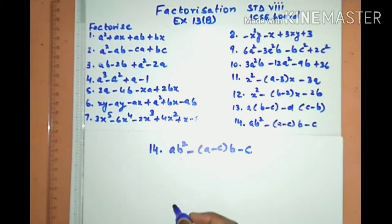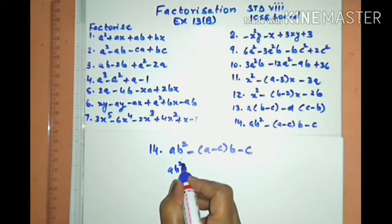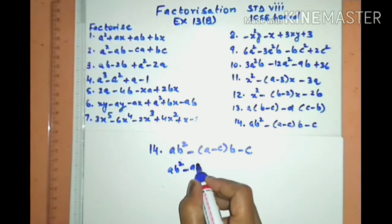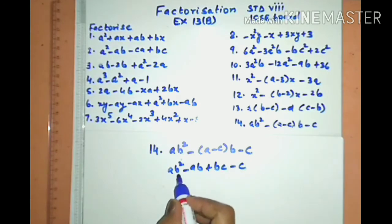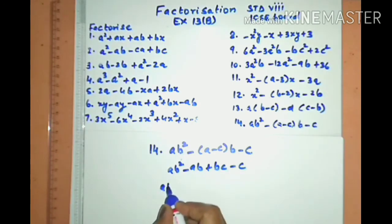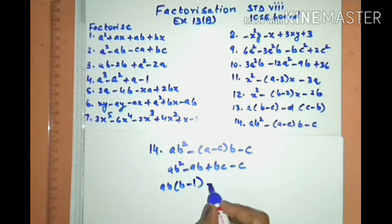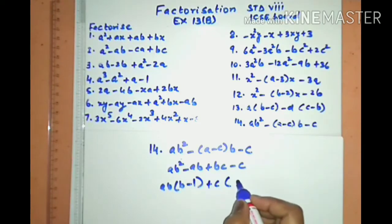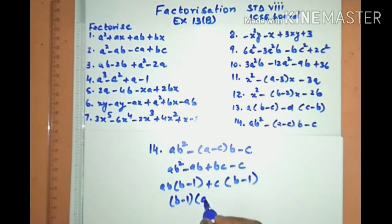Sum number fourteen is similar to the earlier ones. The middle term is multiplied by minus b, giving ab² − ab + bc − c. ab is common from the first pair, giving (b − 1) in the bracket. Then (b − 1) is a common factor in both terms, and the remaining bracket is (ab + c).